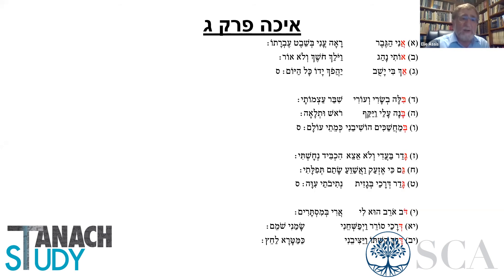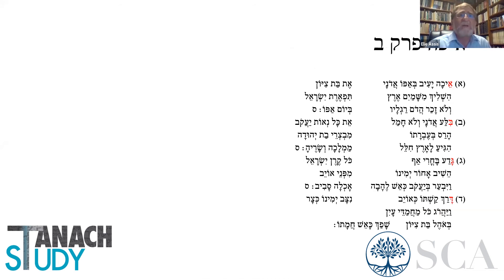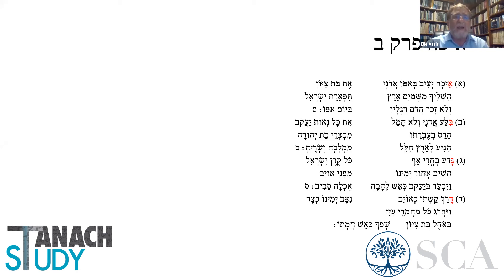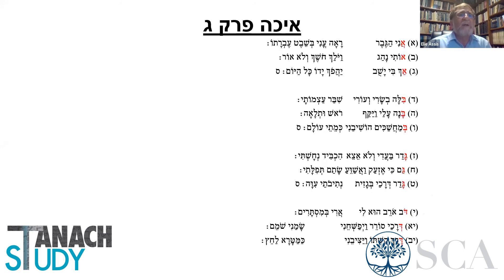By the way, the chapter is not longer than chapters 1 and 2. In chapter 2, each stanza has three lines — for example, Echa ya'i ba'apo Adonai et bat Ziyon, yishlik mishamayim erati. So in chapter 3, the length of each verse is a third of the length of the verses in chapter 2. Chapters 1, 2, and 3 are all in acrostic form and the same length.